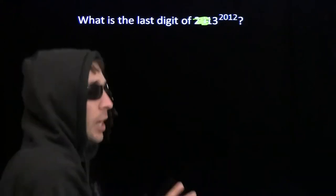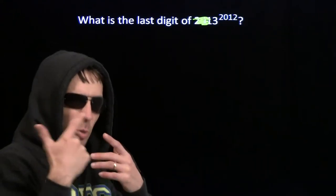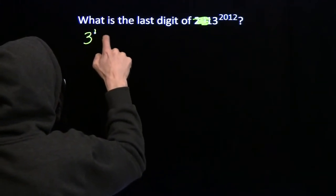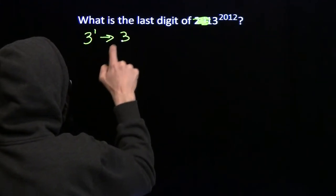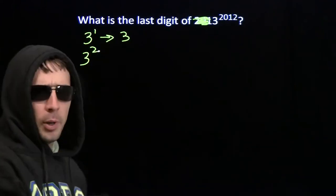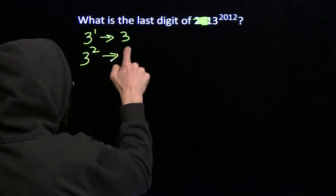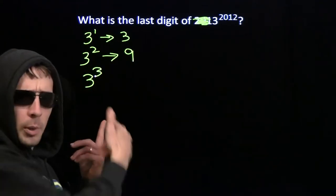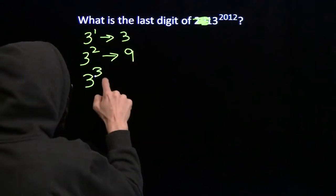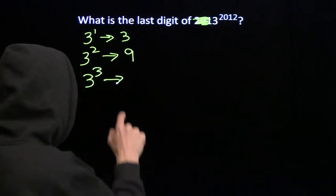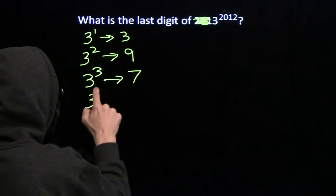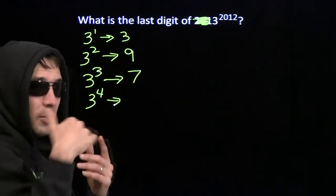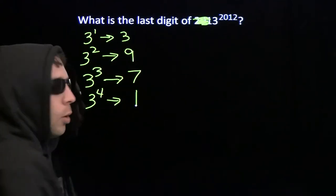Let's start pounding out some powers of 3. But all we care about is the last digits, so we're just going to look at the last digits of these powers. 3 to the first is easy — that's just 3. Then 3 squared, we get that by multiplying 3 by 3, which ends in 9. 3 cubed, we multiply 3 squared by 3 — multiply 9 by 3, you get something that ends in 7. 3 to the fourth, multiply 3 cubed by 3 — something that ends in 7 by 3 — you get something that ends in 1.